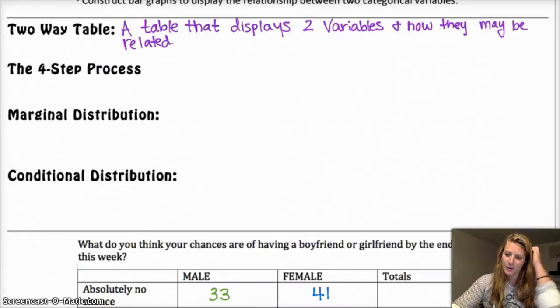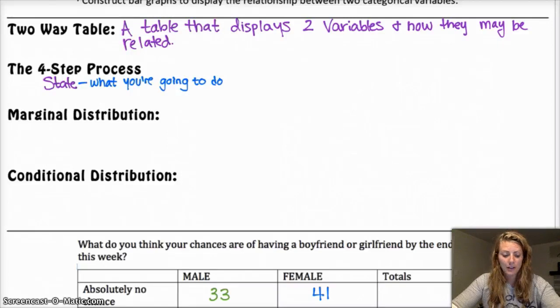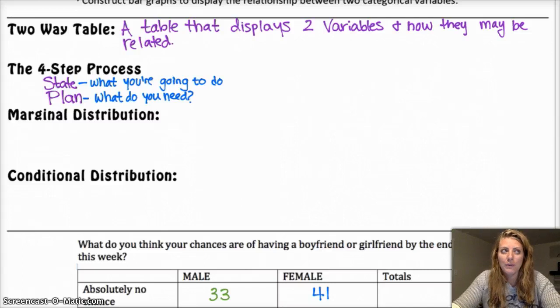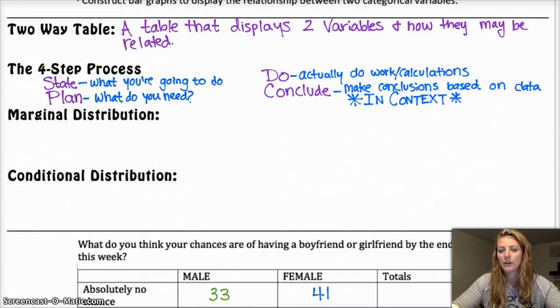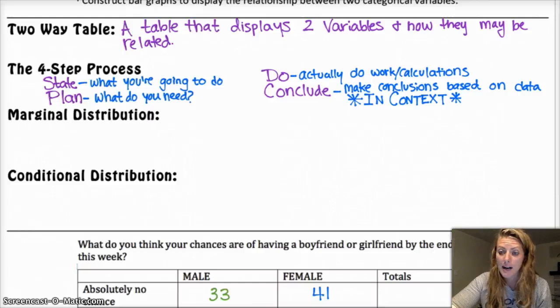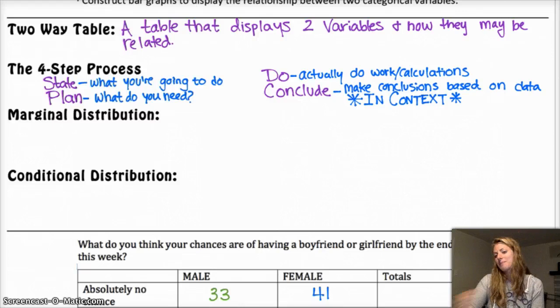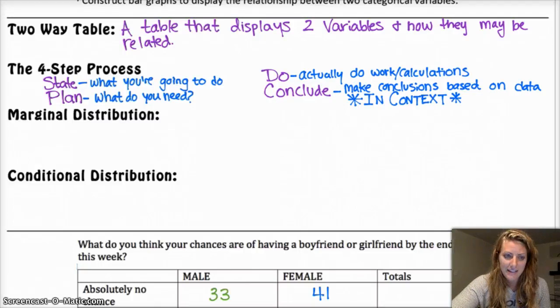Okay, so the four-step process is a process that we don't really use a whole lot right now, but it's introduced in the book now. But we'll use it a ton when we're doing in the second half of the class with hypothesis testing and confidence intervals and everything. And basically, it's just a way to organize your thoughts for stats. You want to state what you're going to do. You want to plan, basically, what do you need in order to perform this study correctly. Do, actually do the work and calculations, and then conclude, make conclusions based on the data. Always has to be in context. If you ever conclude something out of context, you will not get full credit because you have to answer things in context because context is really important in stats.